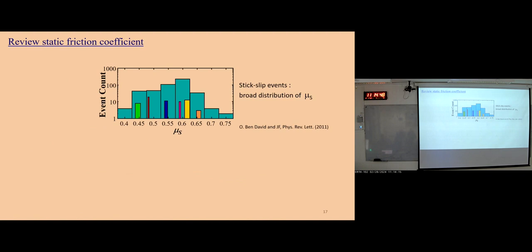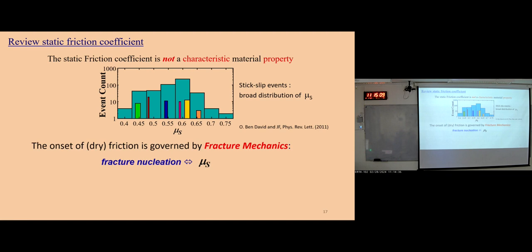Let's review the static friction coefficient. During stick-slip events, we can force-trigger slip under different shear stresses, which gives a broader distribution of the static friction coefficient. This means it is not a fixed material property — it is actually governed by fracture mechanics. More precisely, this number is controlled by fracture nucleation, which is outside the topic of today.